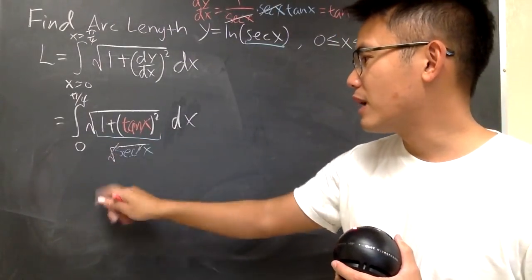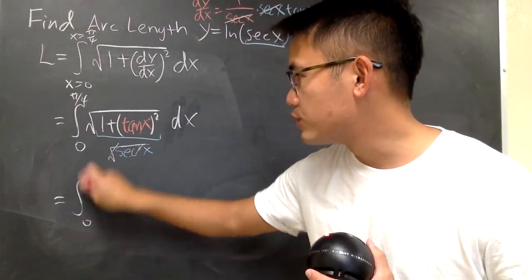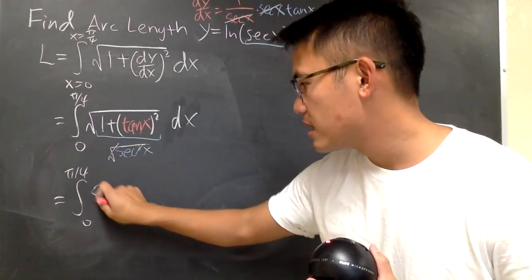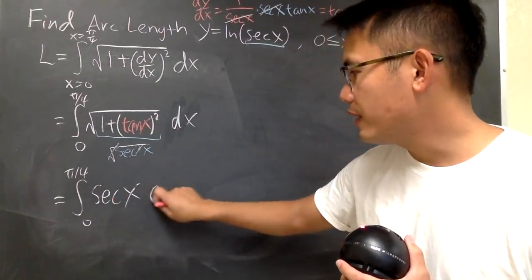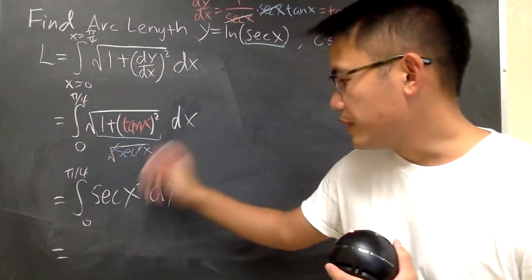So of course you can cancel them out. Everything is positive. In other words, you are just going to integrate from 0 to π/4 of sec(x) right here. And this is one of the integrals that you should remember.